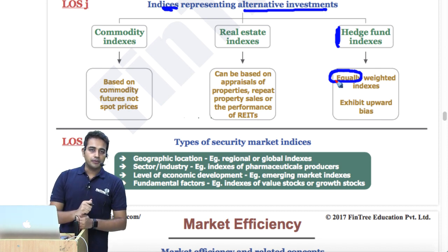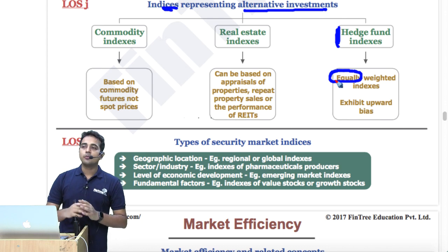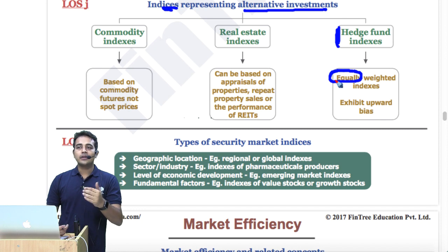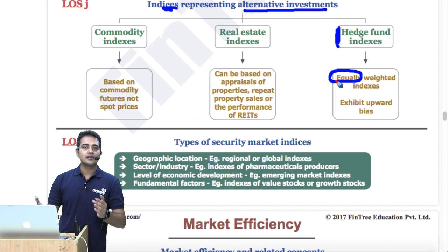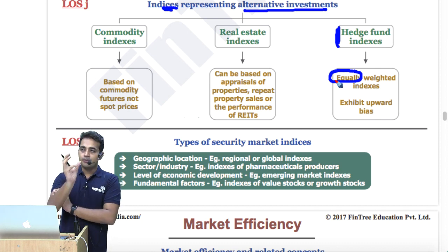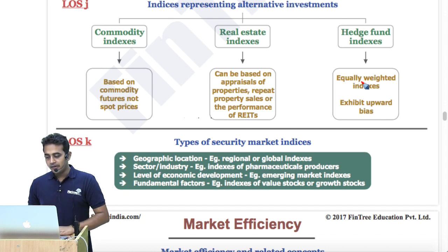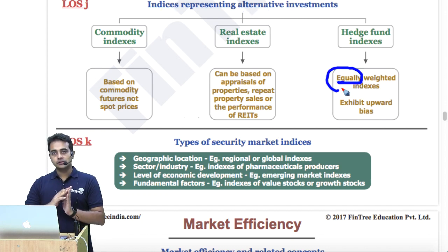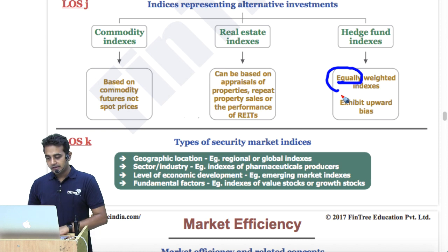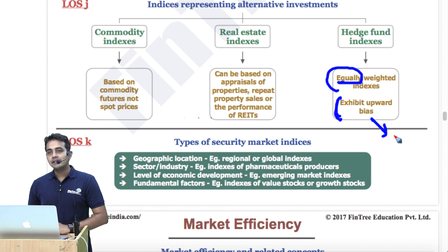For hedge fund indices, because they take on so much leverage it doesn't make sense to calculate a price, and an investor wouldn't buy one unit of a hedge fund since it's only for high-ticket individuals. The most appropriate index for hedge funds is typically equally weighted — giving the same weights to each constituent. These exhibit upward bias in returns because of survivorship bias: only the funds which have survived remain part of the index.